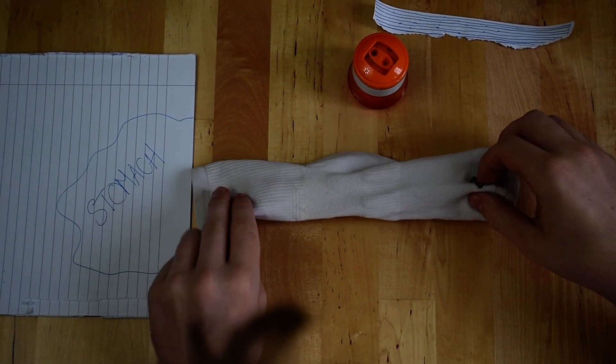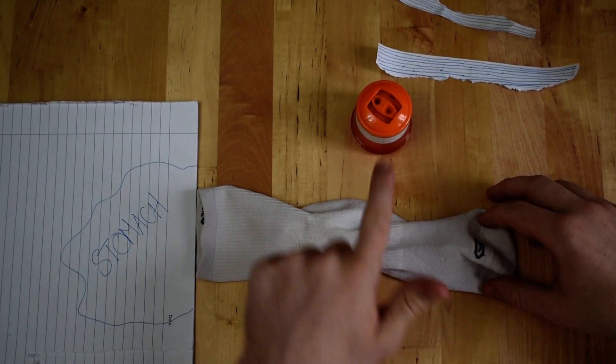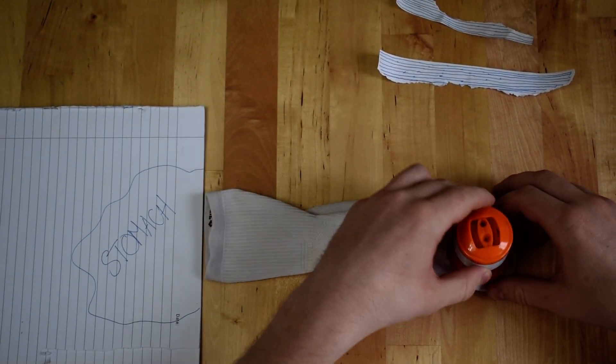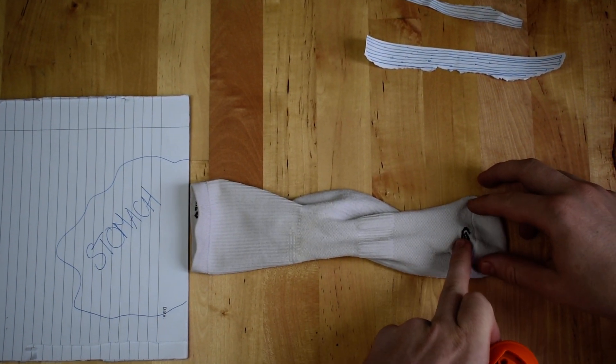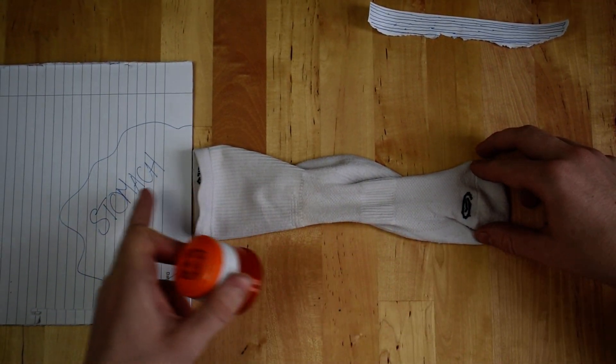Okay, so the sock will represent the esophagus, and we're going to put the food, which is the sharpener, in here. I'm going to show you how, with peristalsis, it moves from this end to the stomach.